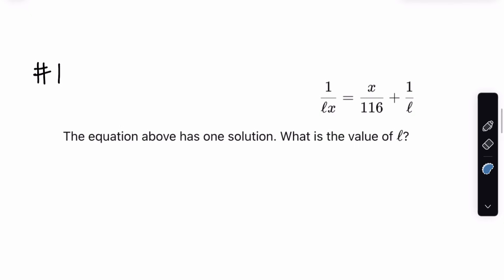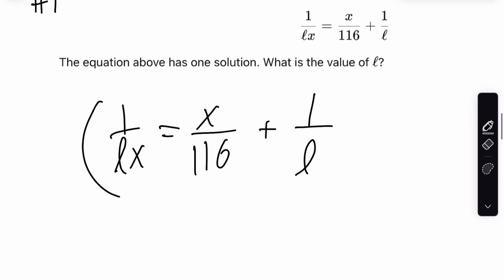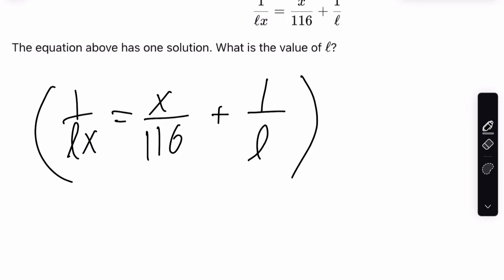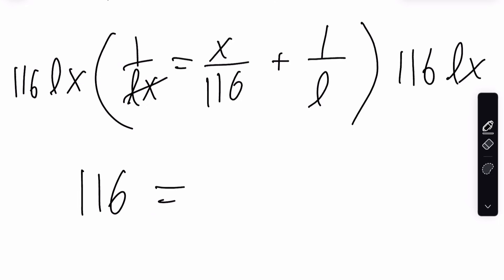Number one, the equation above has one solution. What is the value of L? When I see fractions like these, my mind immediately goes to multiplying these fractions out of the denominator. So, if we multiply this entire equation by 116LX on both sides, it's going to be 116 equals LX squared plus 116X.